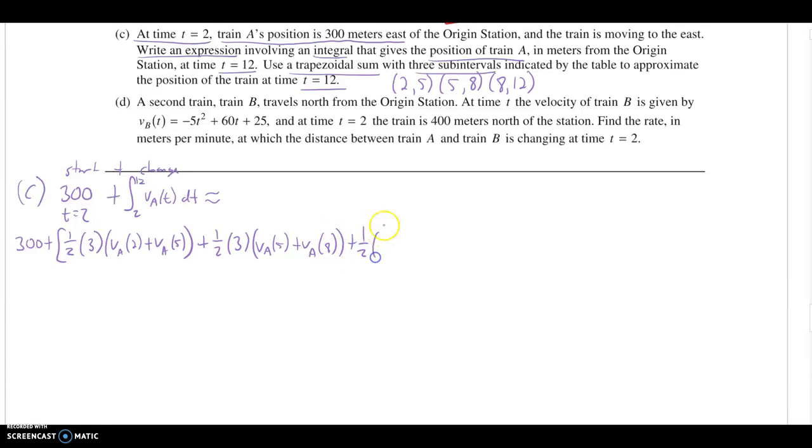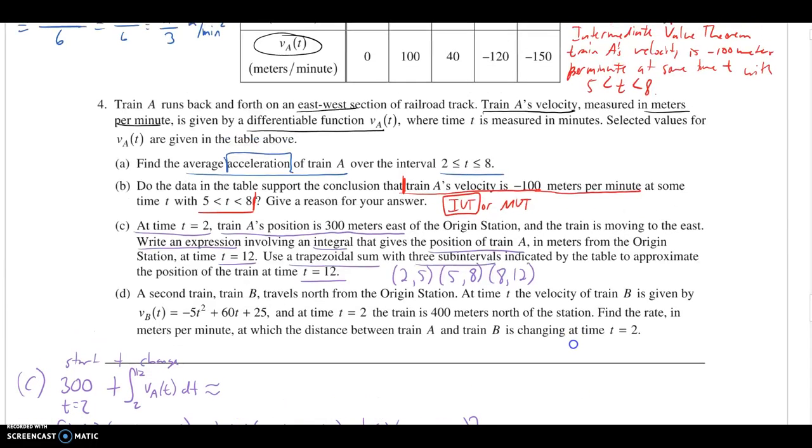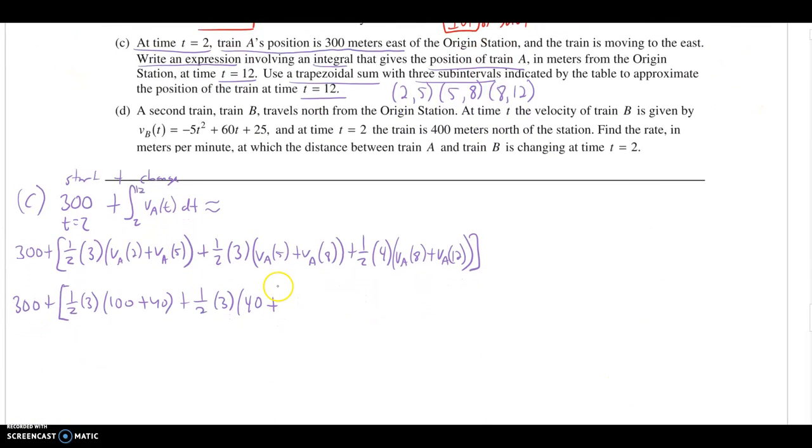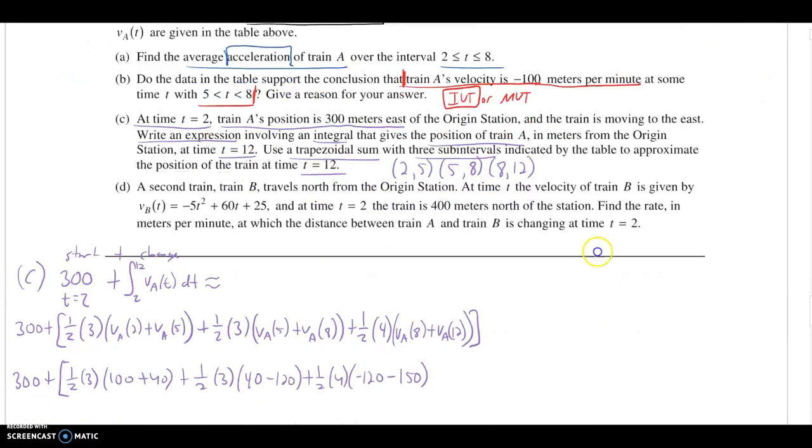And then, plus 1 half. This last height is 4, from 8 to 12. And we would use VA of 8, plus VA of 12. Then we would just want to go ahead and plug the actual values in. You can pull the 1 half to the outside if you want to. You can start simplifying little things. I'm just going to do the least amount of work possible and plug in my function values. I'll have to keep scrolling up here. 2 and 5, or 140. Plus, 1 half times 3. 40 was for 5. 8 was negative 120. Actually, I'll go ahead and change that to a minus. Plus, 1 half, 4. Now, I've got this negative 120. Minus the 150. Yes. 150 at time 12.